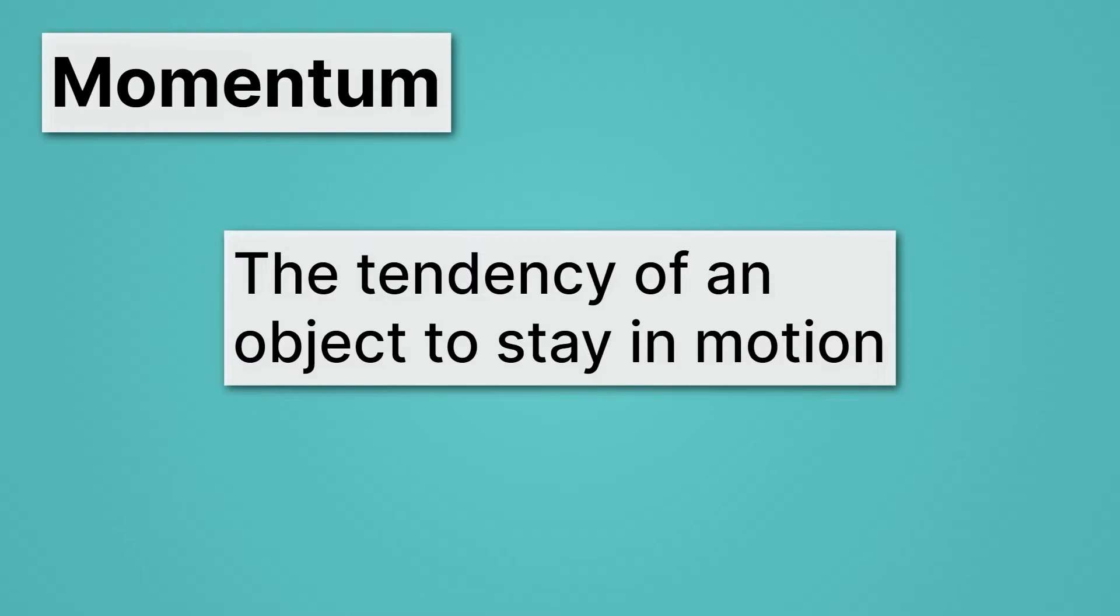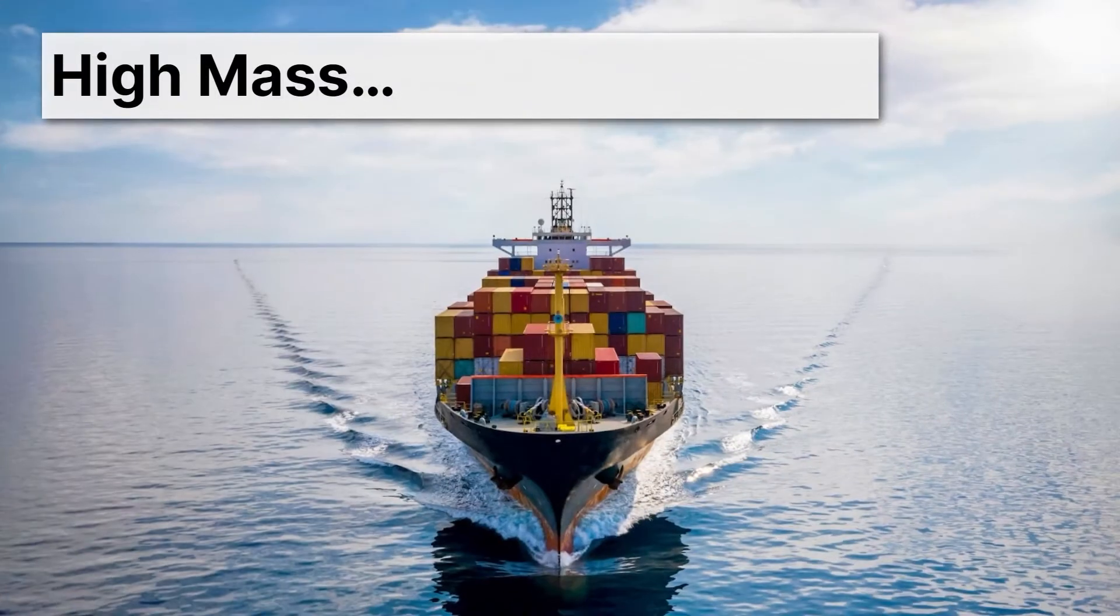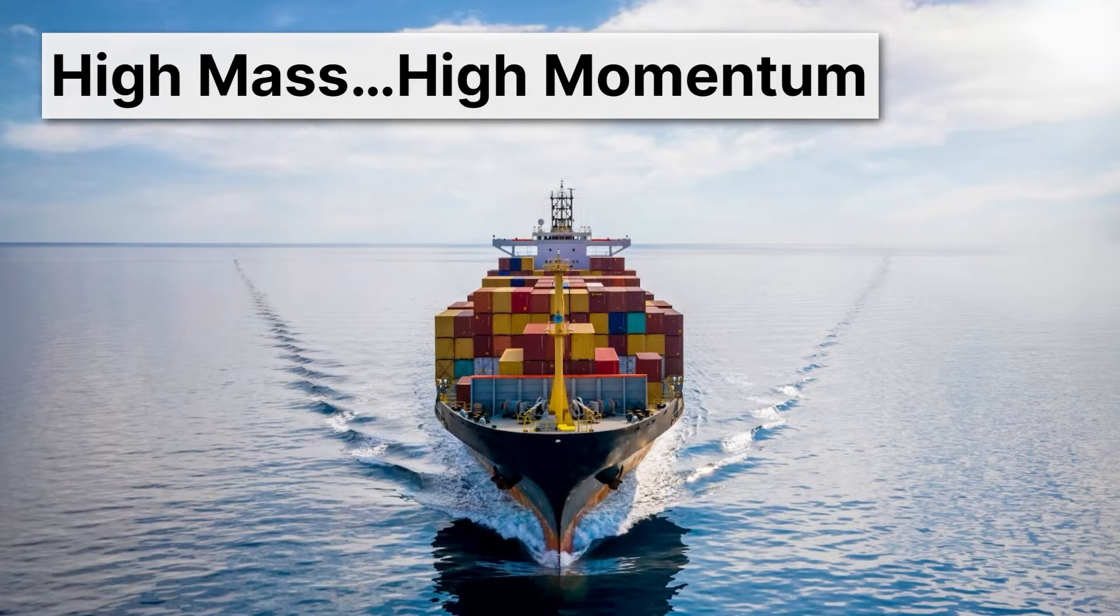First up, what in the world is momentum? Well, we can give a definition of momentum as the tendency of an object to stay in motion. We'll think about that definition as we go through what momentum depends on. As we mentioned in the intro, momentum depends on mass. So if something has high mass, like this container ship, just imagine trying to stop this. It has high momentum. And now you can see what we mean by a tendency to stay in motion. This container ship is going to keep moving unless something very serious happens.